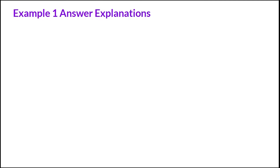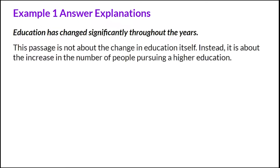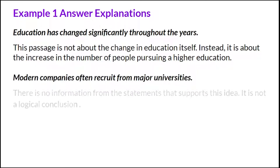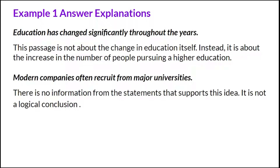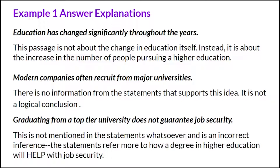Let's take a look at the incorrect answers. 'Education has changed significantly throughout the years' — this passage is not about the change in education; it's about the increase in the number of people pursuing higher education. 'Modern companies often recruit from major universities' — there's no information from the statements that supports this idea, so it's not a logical conclusion. 'Graduating from a top-tier university does not guarantee job security' — this is not mentioned in the statements whatsoever. The statements refer more to how a degree in higher education will help job security.